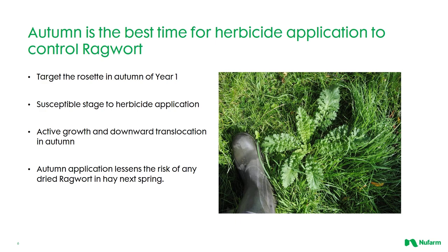Autumn is the best time for herbicide application to control ragwort. You control the rosette in autumn of year one — this is the susceptible stage for herbicide application. There is active growth in the autumn and downward translocation. Autumn application also lessens the risk of any dried ragwort in hay the following spring, as the plant will have senesced and died off by the time you come to grazing and making silage.